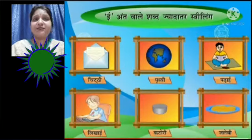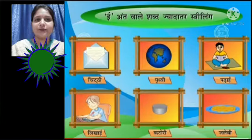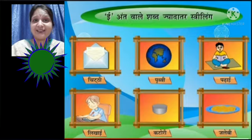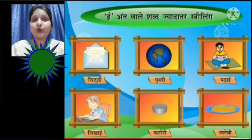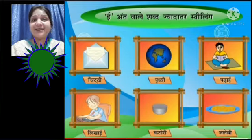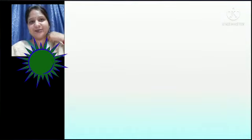Ab dekhiye, ye ant waale shabd zyaadatar Striling hote hain. Inki kuch ek pahchan hai ki jinmein zyaadatar ye aata hai vo Striling kehlate hain. Dekhiye - chitthi (i), prithvi (i), padhai (i), likhai (i), katori (i), jalebi (i). Inki aakhiri mein ant mein kya raha hai? 'i' - to ye zyaadatar 'i' aane waale shabd kya kehlate hain? Striling hote hain.